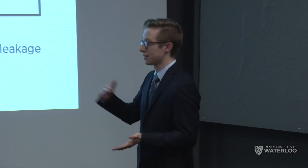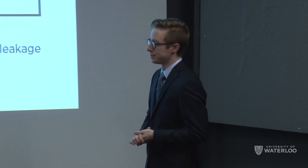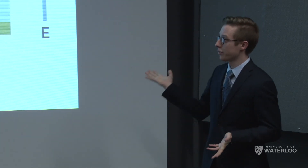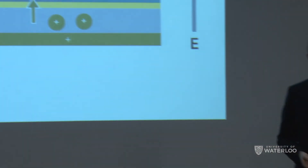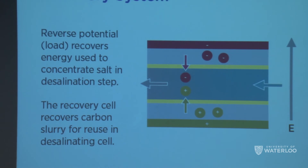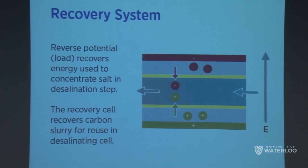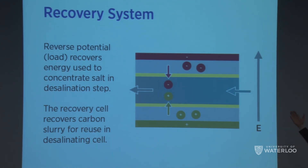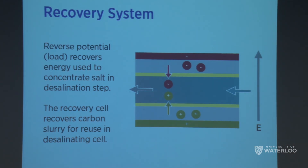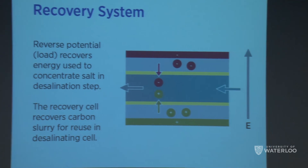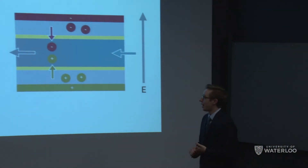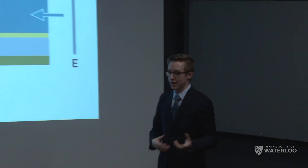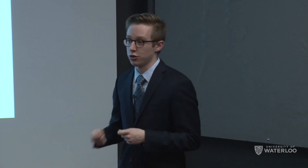The recovery system would simply be the exact same cell under reverse conditions: inputting a salt-concentrated slurry and the same input stream, then concentrating the salt further to produce a waste stream. Instead of drawing ions in, like charges repel the ions back into the center stream. This works in two ways: we can apply a load which returns energy to us — working like a battery — and we can take that energy and use it again to desalinate. In addition, this completes our closed loop, regenerating carbon that can be used to desalinate once again.